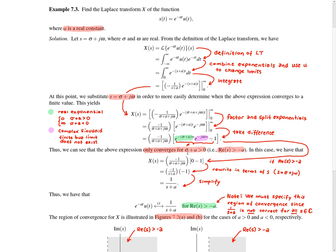We're going to proceed by assuming that σ + a > 0, in other words assuming that this expression does converge. Note that σ + a > 0 is equivalent to the real part of s being greater than −a. Proceeding with this assumption, we have the next line, and we can rewrite σ + jω in the denominator as s.